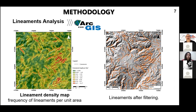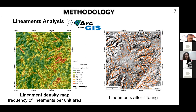The result of the extraction of the lineaments shows a high density of lineaments. The lineaments were analyzed by creating a lineament density map. Lines with low significance were filtered out — specifically, lineaments shorter than 500 meters were removed, considering the spatial resolution of the base model, the extension of the study area, and the working scale.